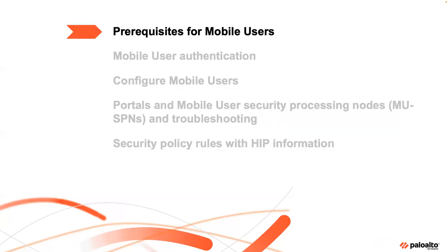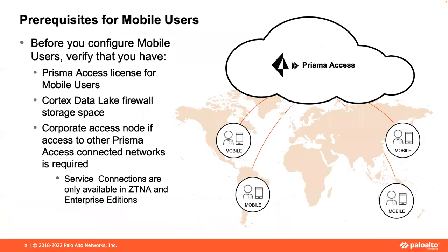We'll begin with what you need to have beforehand. You need the proper licensing — that's the first thing. There are a couple of different licensing levels that support mobile users; there are some that don't. Our enterprise licensing does, as well as our ZTNA licensing — our Zero Trust Network architecture — which is designed to include the mobile user solutions. You also need to have a Cortex Data Lake instance for logging. If you already have any components set up for Prisma Access, you've already got that.